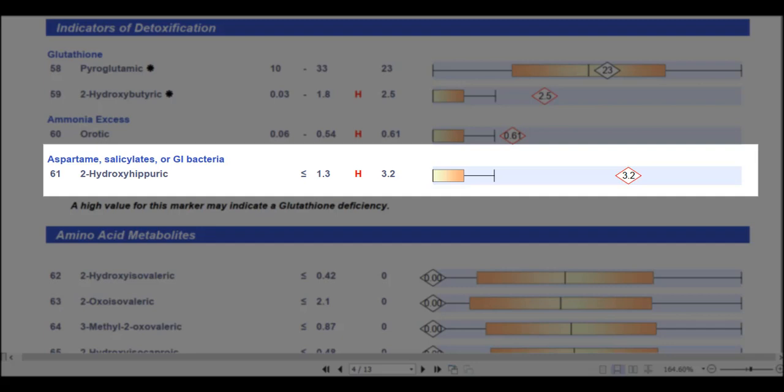2-hydroxyhippuric acid, so this is a conjugate of the amino acid glycine and hydroxybenzoic acid. This marker can be increased by taking aspirin, consuming aspartame, or by an overgrowth of salicylate-producing gastrointestinal bacteria. It's also worth mentioning that if 2-hydroxyhippuric acid gets very high, it can inhibit the enzyme dopamine beta-hydroxylase, which can cause an elevated homovanillic acid.